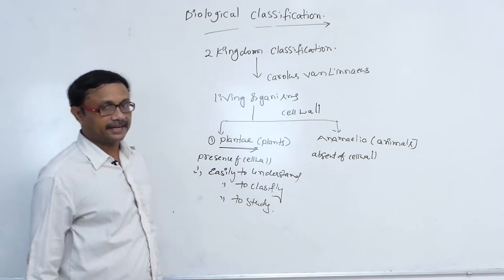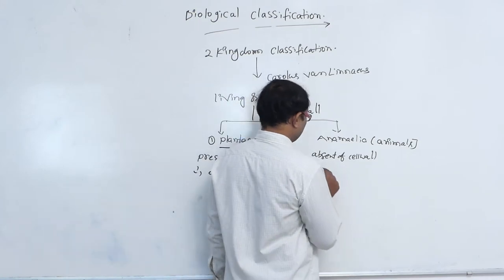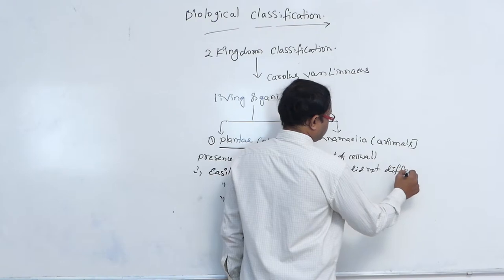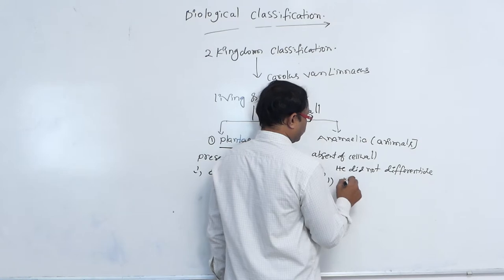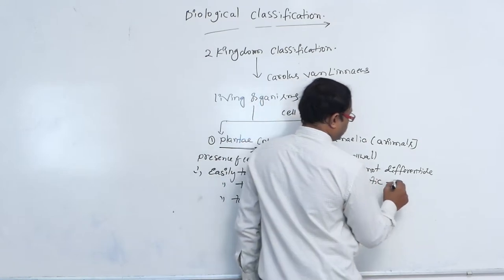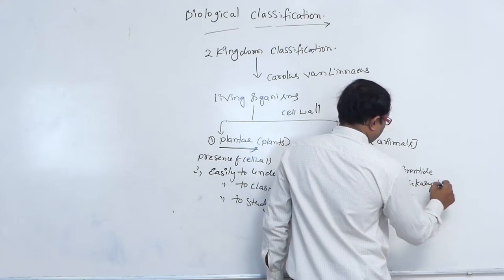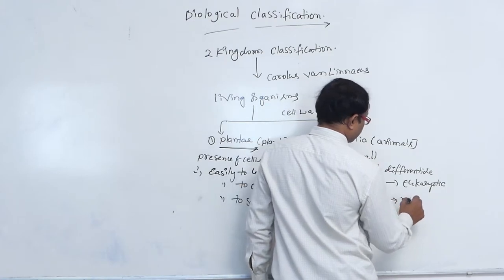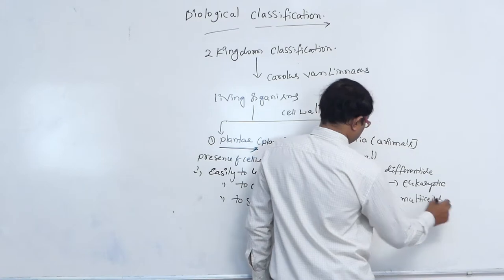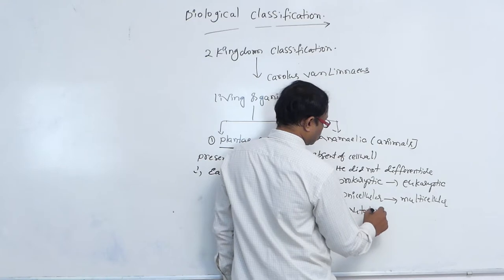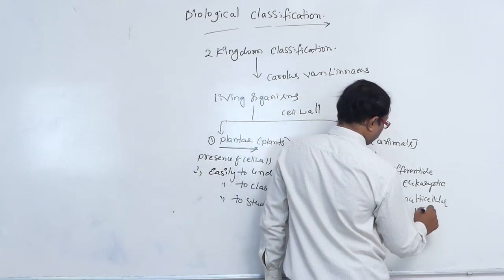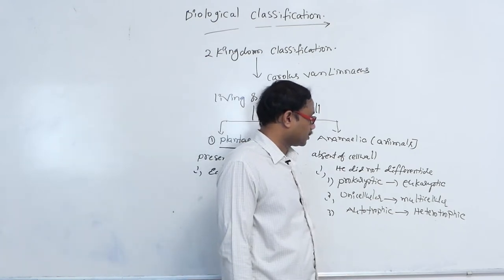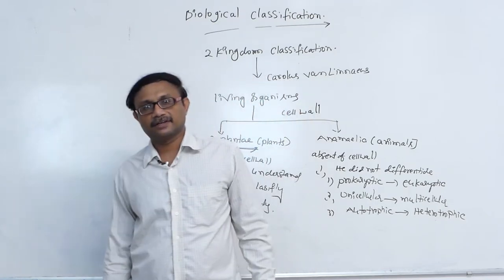But he did not consider other characters. For example, he did not differentiate prokaryotic and eukaryotic. Second, he did not differentiate unicellular and multicellular. Third, he did not differentiate autotrophic and heterotrophic conditions.